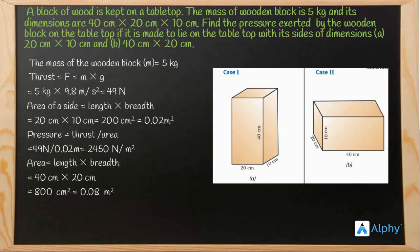So the pressure is we know thrust per area. So we are putting all this value in this formula. So pressure is equal to 49 newton divided by 0.08 meter square or 612.5 newton per meter square.